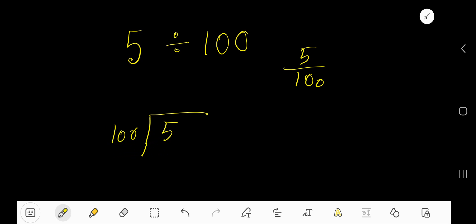Here, 5 is less than 100. So, at first, we will convert this 5 into a decimal number. Taking decimal and then you can take any number of 0 according to your need. Look, 100 goes into 5. How many times? Since this is smaller, 0 times.